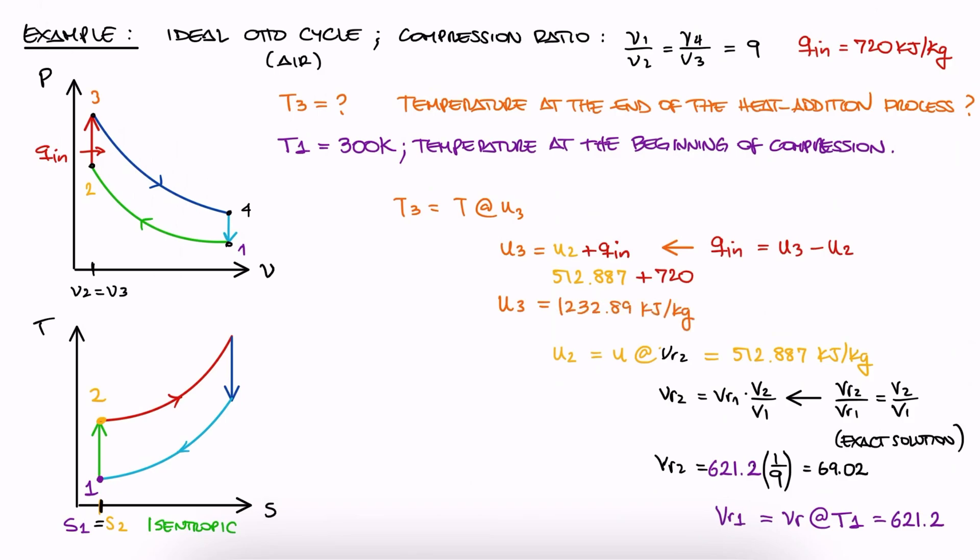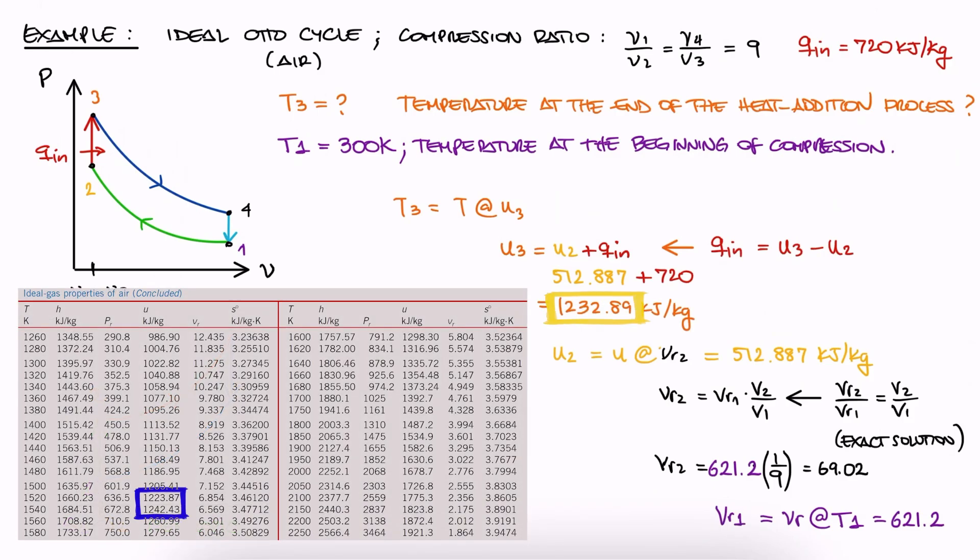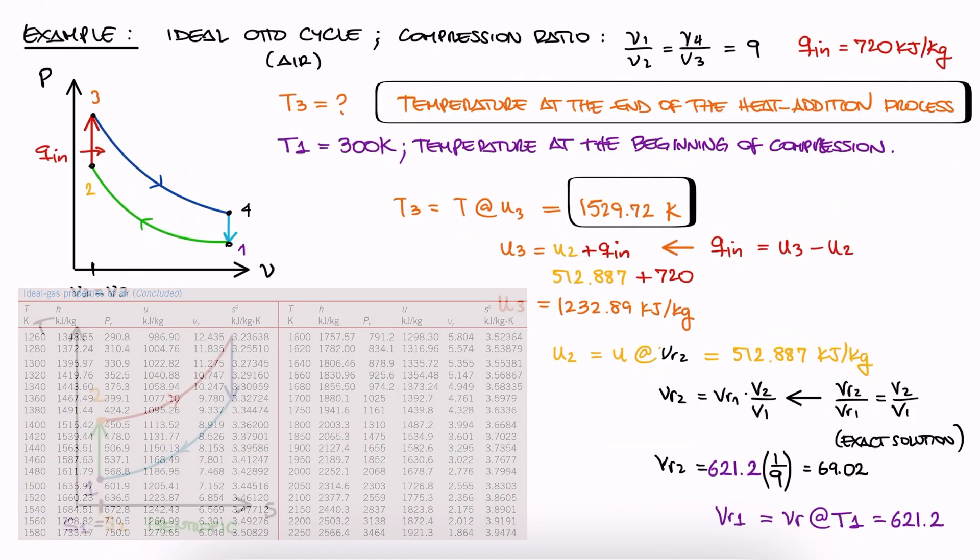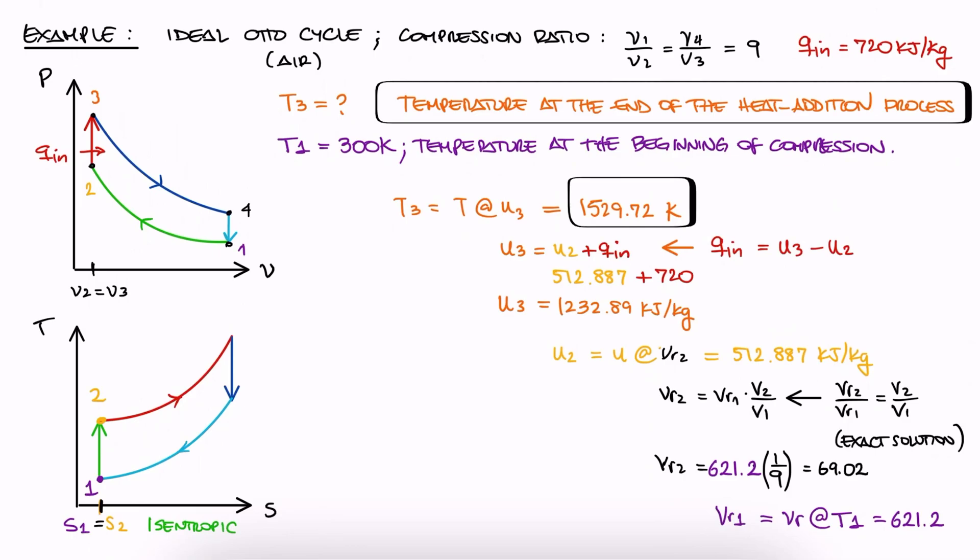With U2 and the given heat transfer, we calculate U3, and once again, with the two closest values to U3, we interpolate, this time to find temperature T3. And this is the temperature at the end of the heat addition process.